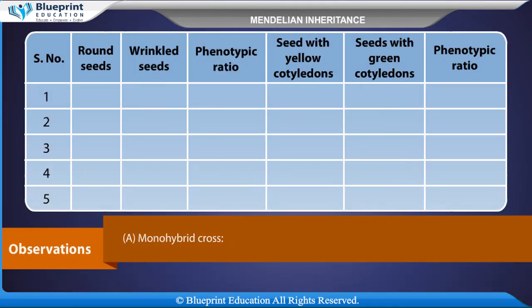Observations — Monohybrid cross: Round seeds, wrinkled seeds, phenotypic ratio. Seeds with yellow cotyledons, seeds with green cotyledons, phenotypic ratio.